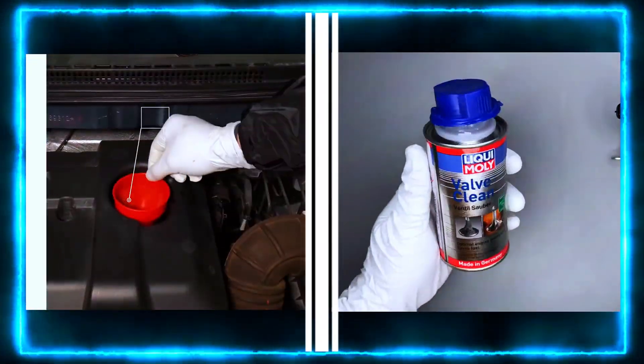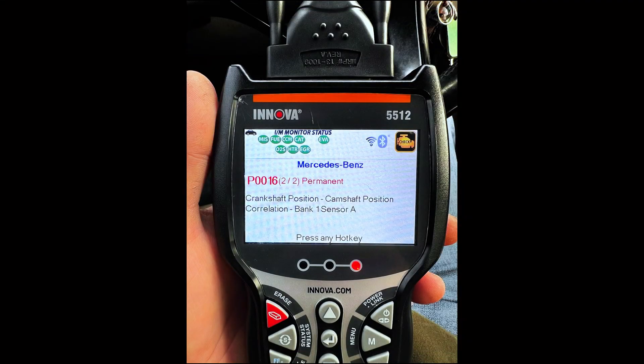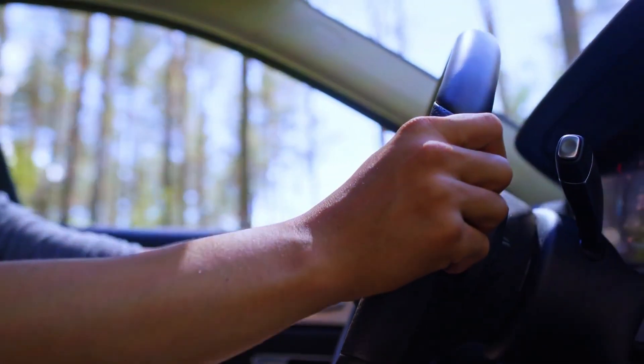Once everything's been cleaned, repaired, or replaced, clear the P0016 code using your OBD2 scanner and take your car for a test drive.